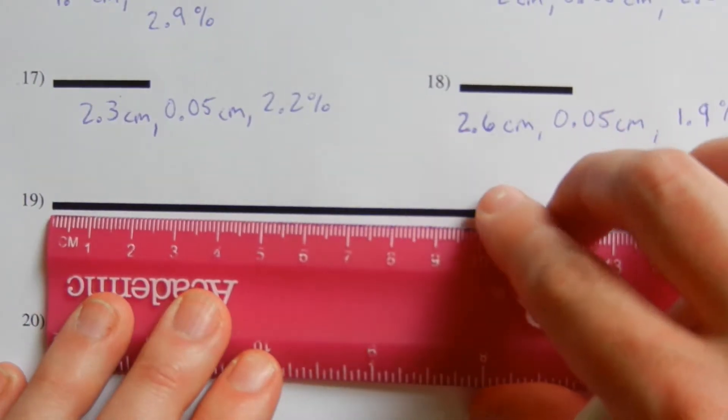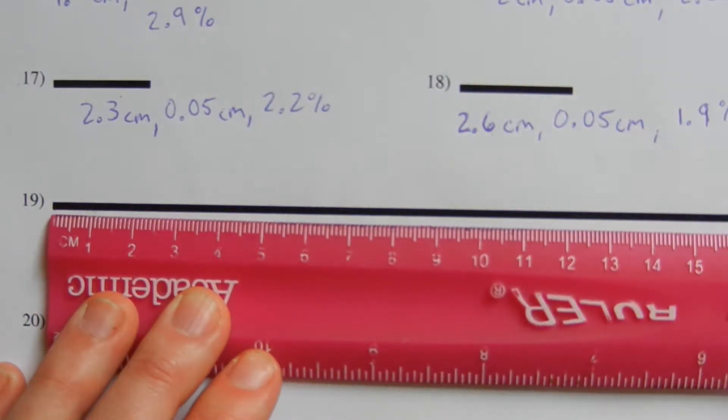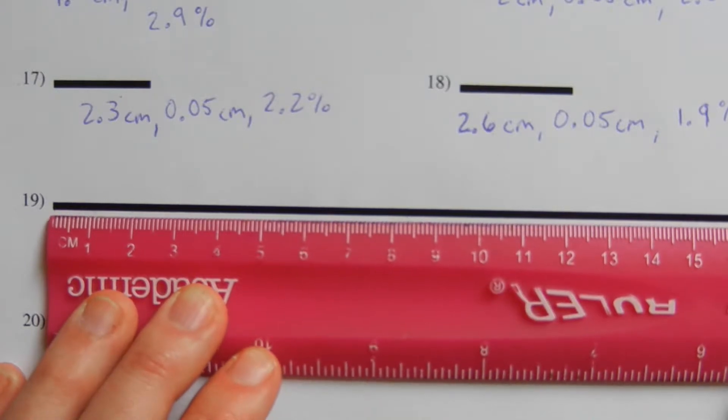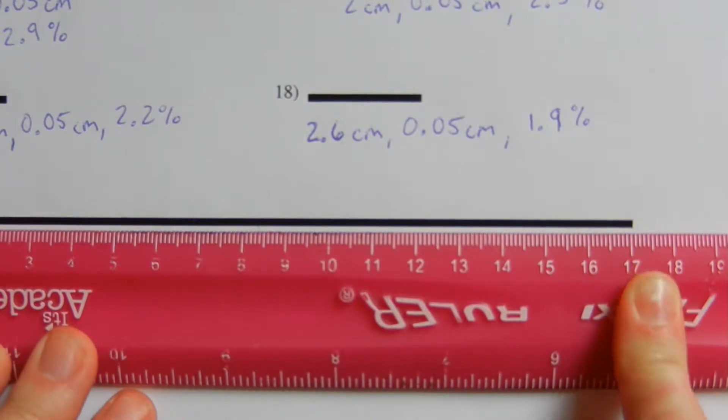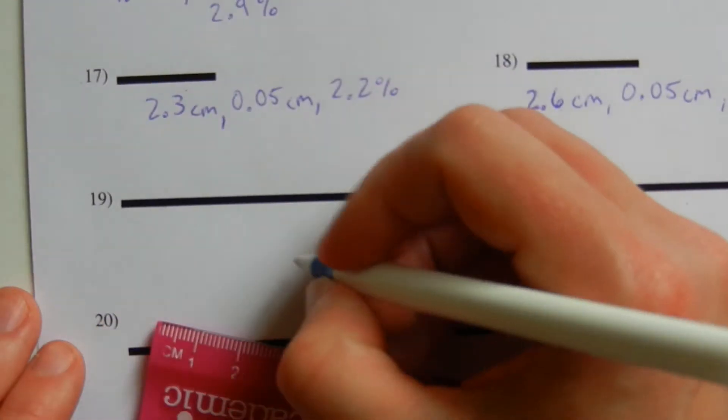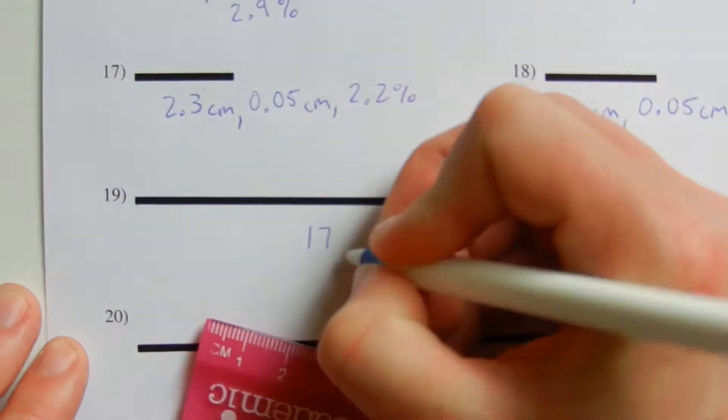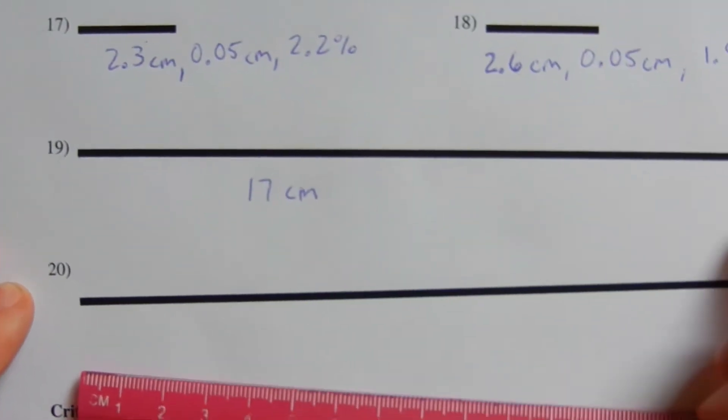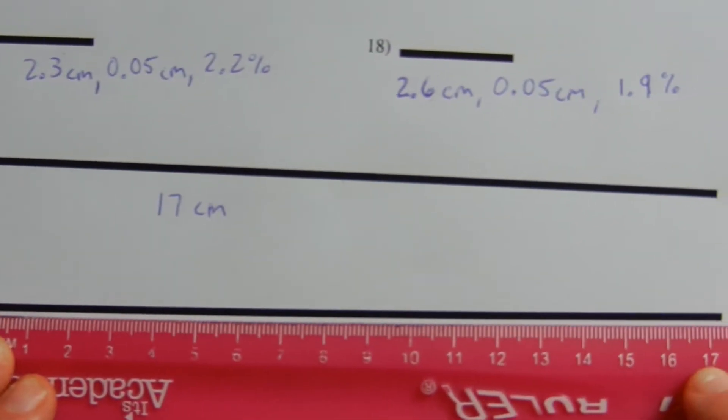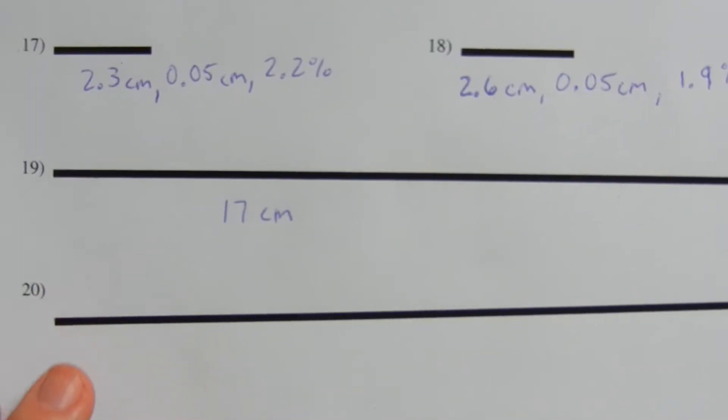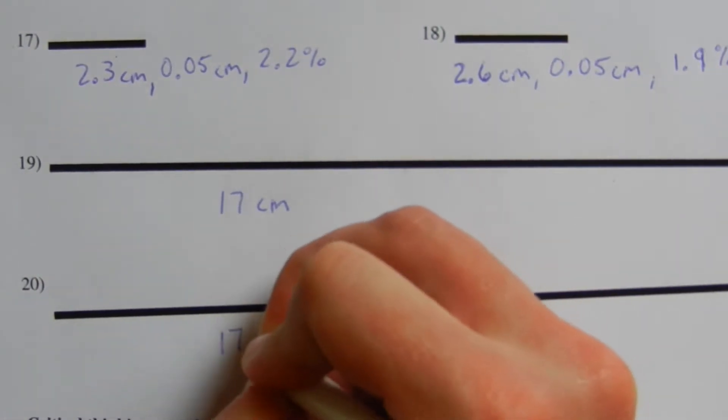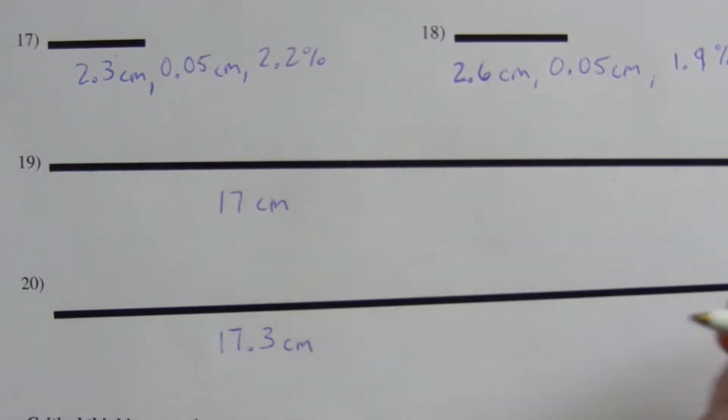So really quickly, I'm going to measure number 19, and then I'm going to measure number 20. Lining my ruler up, 19, sliding that over into the frame, gives me exactly 17 centimeters. And then measuring 20 really quickly, sliding that over into the frame, you can see that I get 17.3 centimeters.